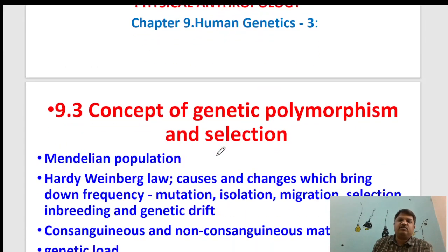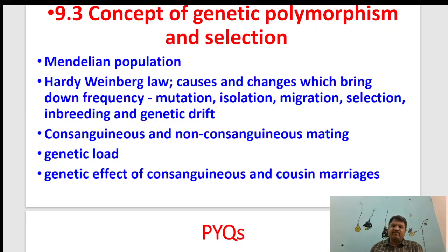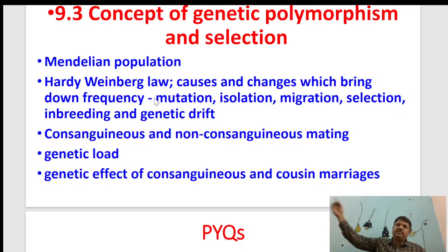Can a change in a population come from only one source? It is like asking whether your home can be called a new home just by changing the sofa set. You need multiple changes. These forces all contribute to change in gene frequency — that means evolution is happening and new forms are coming.